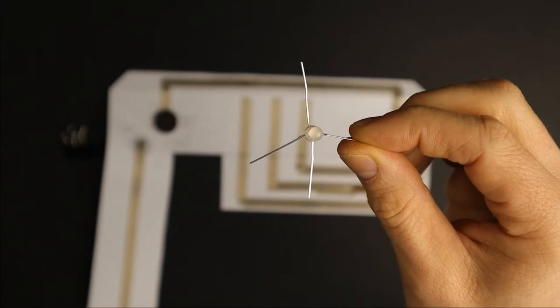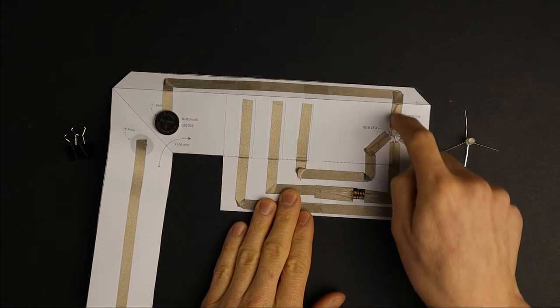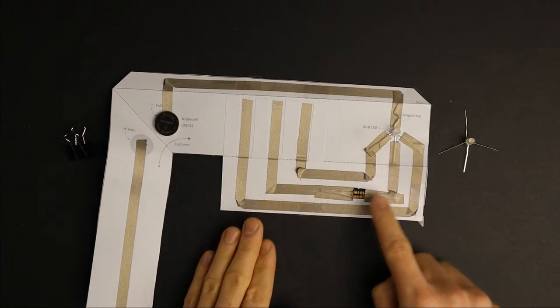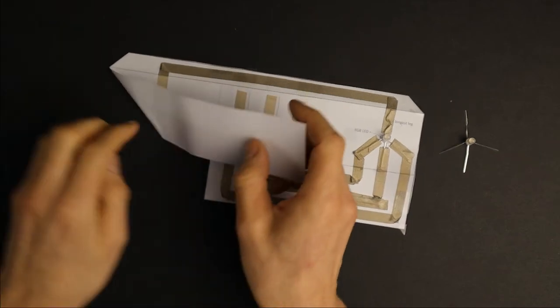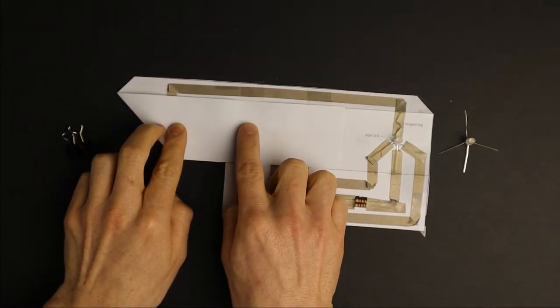To connect our LED, we first need to understand how it works. RGB LEDs have one leg that connects to one pole of the battery and the other three legs connect to the other pole. Depending on which of the three legs is connected, the LED lights up in a different color.